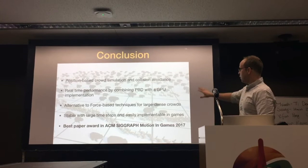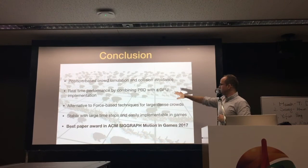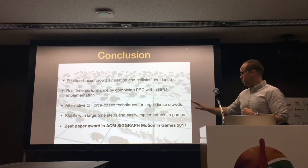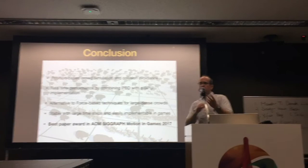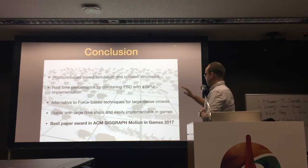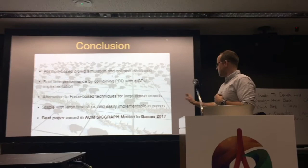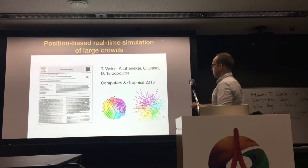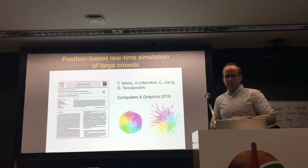To conclude this section: we presented a position-based collision avoidance framework combined with GPU acceleration. This is an alternative to force-based methods — it's stable with large agent counts and easy to implement in game engines. Unreal Engine, Houdini, and other frameworks used by entertainment companies all use PBD, so they can easily integrate our machinery for crowd simulation. This work received the best paper award at ACM SIGGRAPH Motion in Games. There is also an extended paper with more examples, metrics, and measurements comparing against other works.